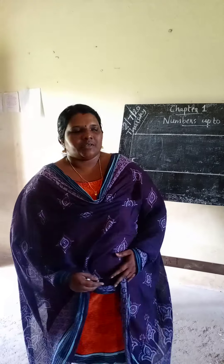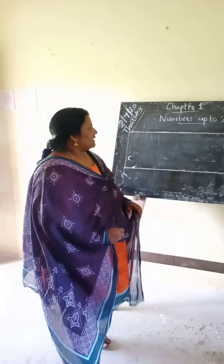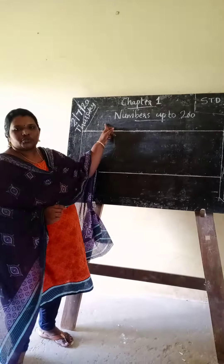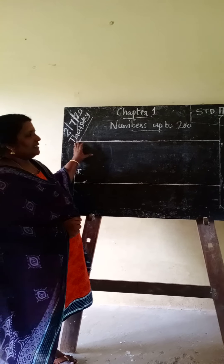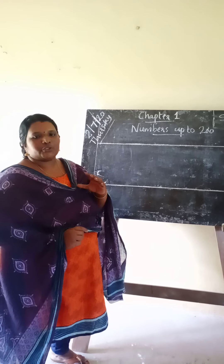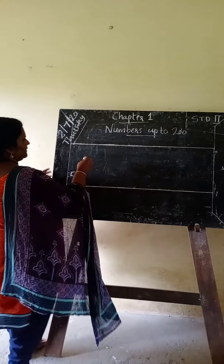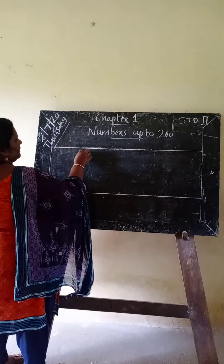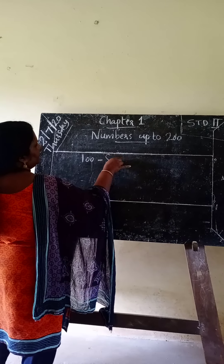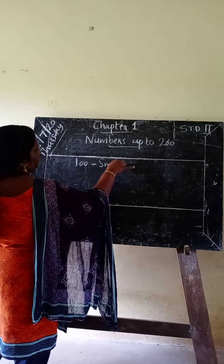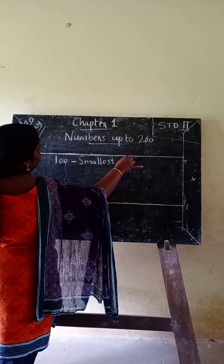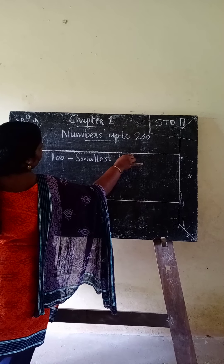Good morning my dear children. Our first chapter is numbers up to 200. We have already learnt about the numbers from 1 to 100. 100 is the smallest 3-digit number.